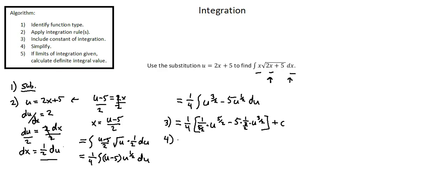Step 4: simplify. We have 1 fourth times 1 over 5 halves, which is 2 over 5, times u to the power of 5 halves, minus 5 times 1 over 3 over 2, which is 5 times 2 over 3, equaling 10 over 3, times u to the power of 3 over 2, plus c.